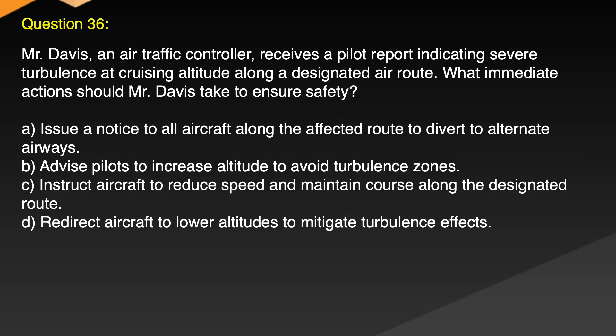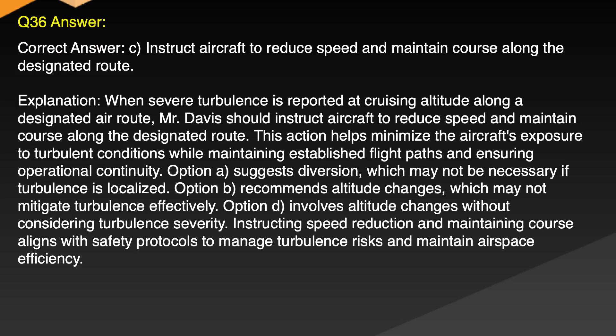Question 36. Mr. Davis, an air traffic controller, receives a pilot report indicating severe turbulence at cruising altitude along a designated air route. What immediate actions should Mr. Davis take to ensure safety? A. Issue a notice to all aircraft along the affected route to divert to alternate airways. B. Advise pilots to increase altitude to avoid turbulence zones. C. Instruct aircraft to reduce speed and maintain course along the designated route. D. Redirect aircraft to lower altitudes to mitigate turbulence effects. Correct answer: C. Instruct aircraft to reduce speed and maintain course along the designated route.